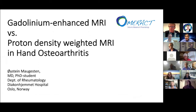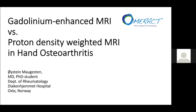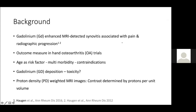Thank you for this opportunity to present these findings on MRI gadolinium enhancement versus proton density MRI in hand-OA. Gadolinium-enhanced MRI detected synovitis is associated with pain and radiographic progression in the same joint in hand-OA patients, and has been suggested as an outcome measure in hand-OA trials with drugs targeting inflammation. Age is the most common risk factor for hand-OA, and consequently hand-OA trials might have a large proportion of older individuals with multimorbidity. Contraindications to gadolinium contrast include previous allergic reaction to contrast agents and severe renal disease.